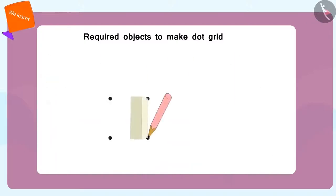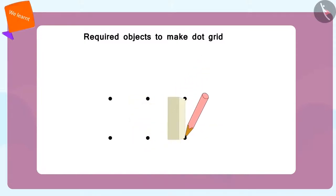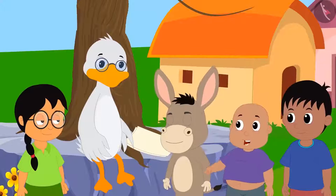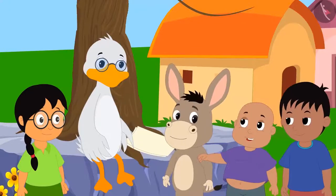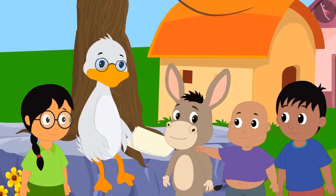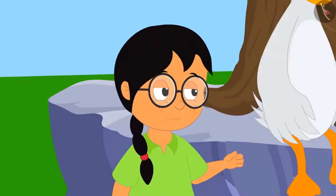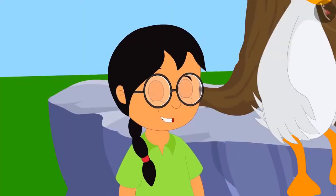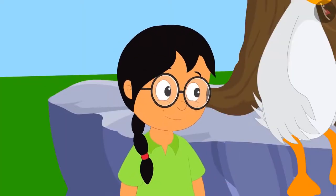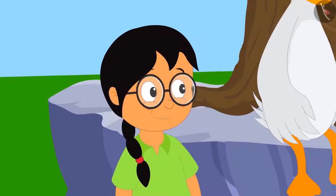'With some practice, I can make this dot grid almost myself. Can you please show me how to use this dot grid?' Meenu asks. 'Suppose I have to make a square. Then I will join these dots — that is, points — then these two points, and finally close the square in this way. Did you see?' Bola explains.